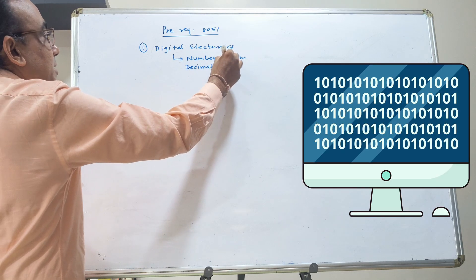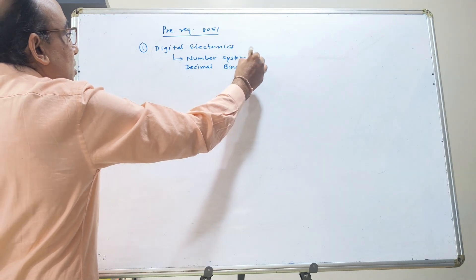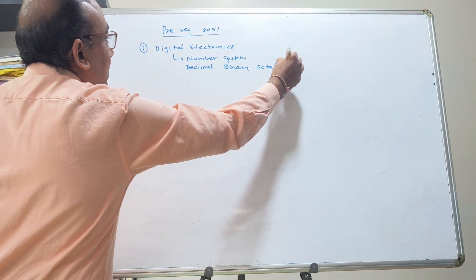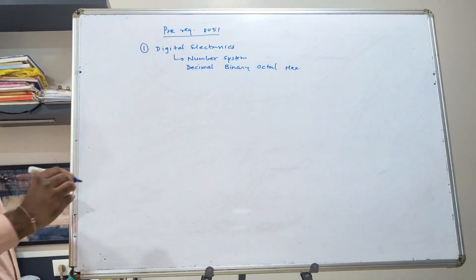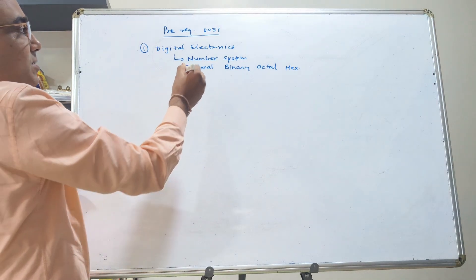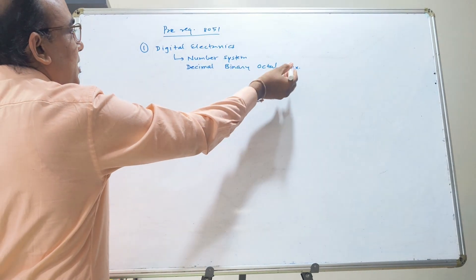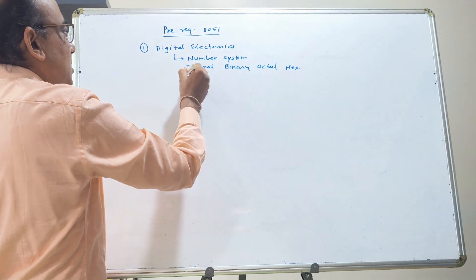Decimal, binary, octal, hex. Conversion from decimal to binary or decimal to octal or binary to octal, hex to binary. So conversion.